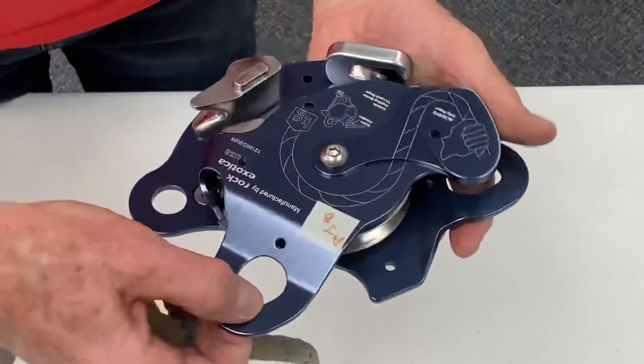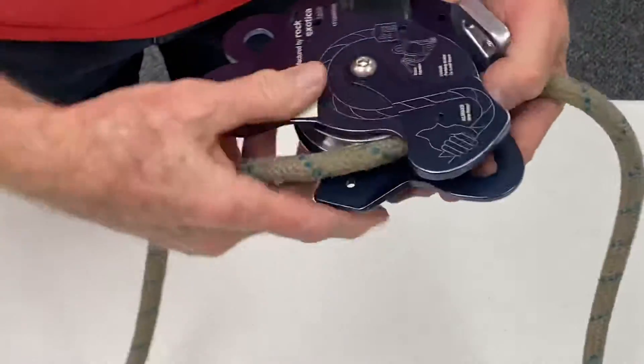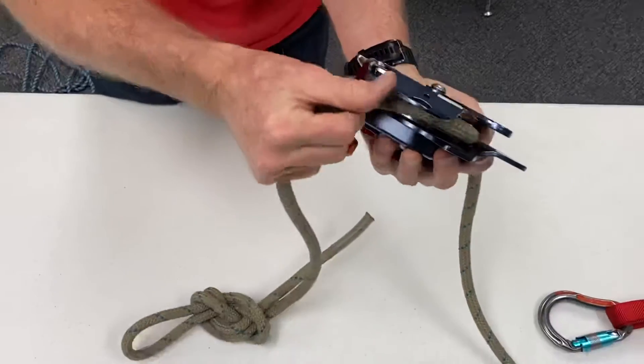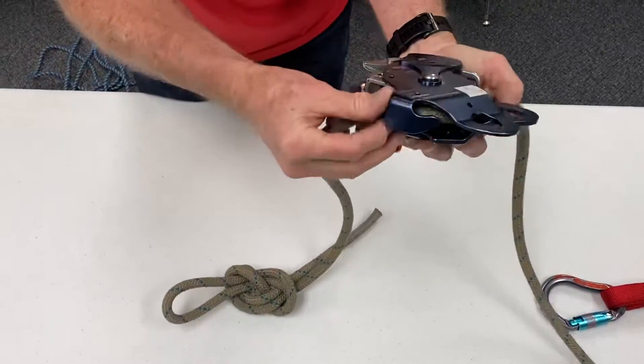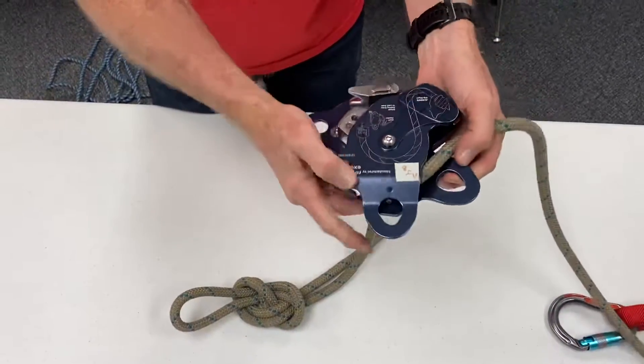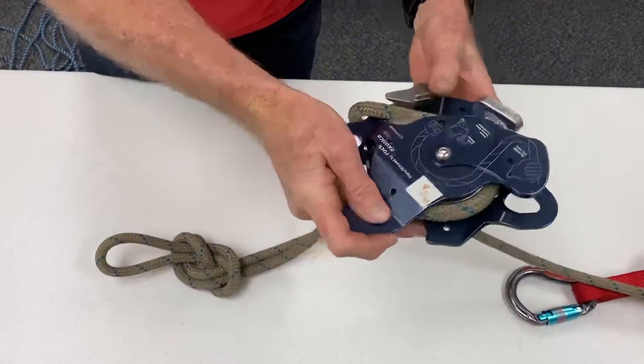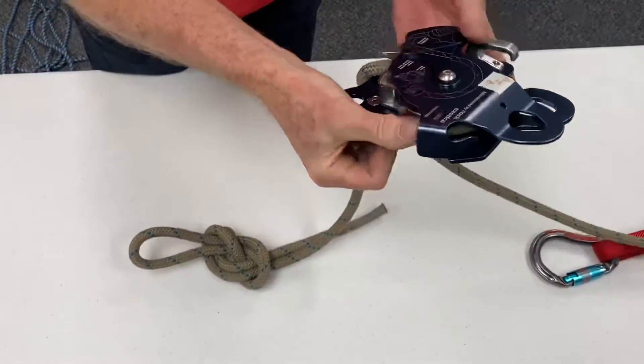So we're going to open this up. We're going to thread it so that it comes from the load on that side. As we come back across here we want to make sure that this comes underneath that piece. We're going to thread it across here, close it up.